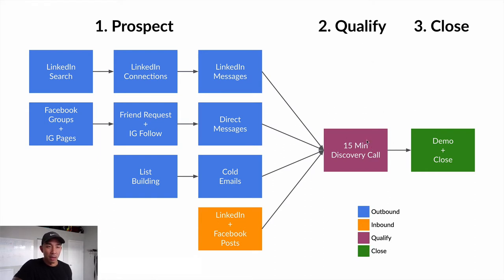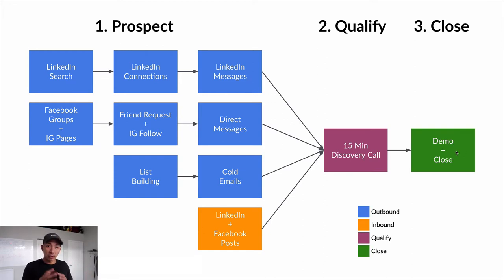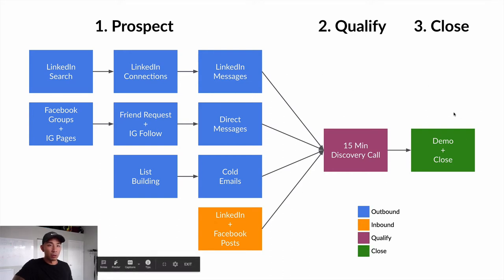This is where we're qualifying them and making sure they're a good fit and we can get them results. It's very important — in the last video we talked about the five criteria — making sure that you only work with clients you can get results for. And then if they're a good fit, you go to a demo or strategy session where you're closing them, turning an interested lead into a paying client. This is the PQC sales process: prospect, qualify, close.